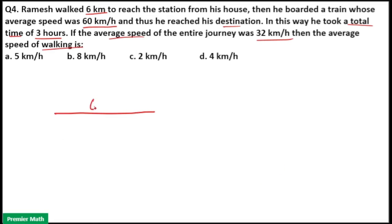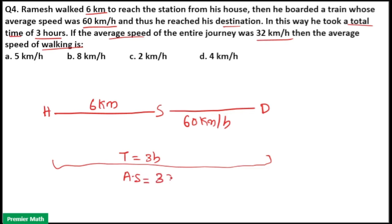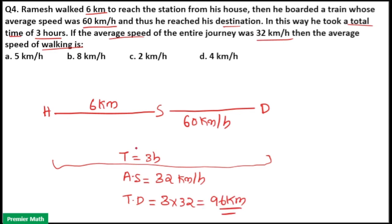Ramesh walked 6 km from his house to the station. Then he took a train and reached his destination with a speed of 60 km per hour, and the time taken for this entire journey is 3 hours. The average speed for this entire journey is 32 km per hour. That means total distance travelled by him is total time into average speed, that is 3 into 32, which is equal to 96 km. So total distance he travelled is 96 km.